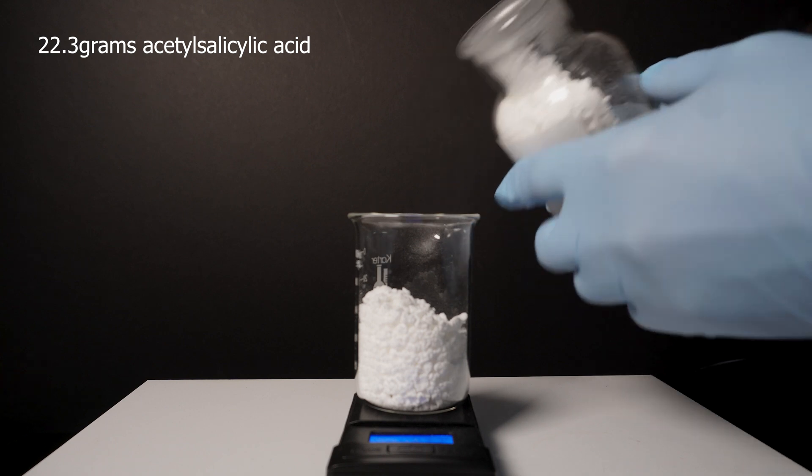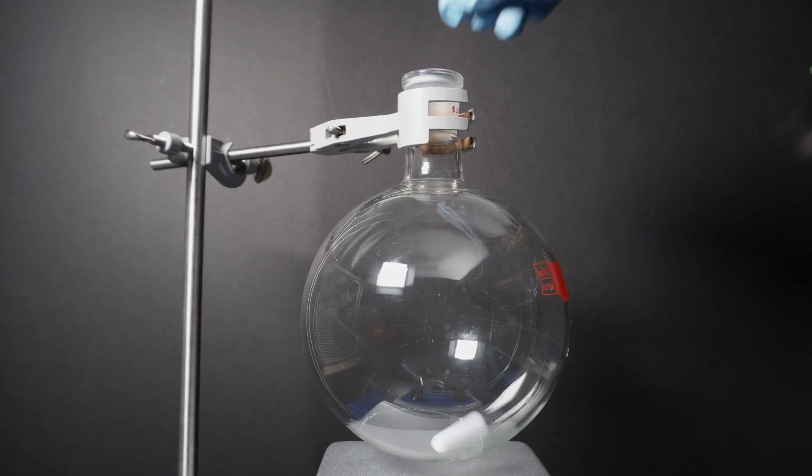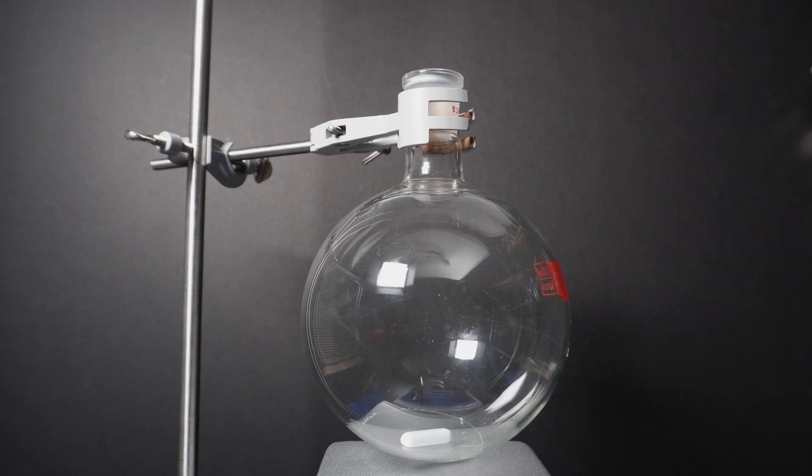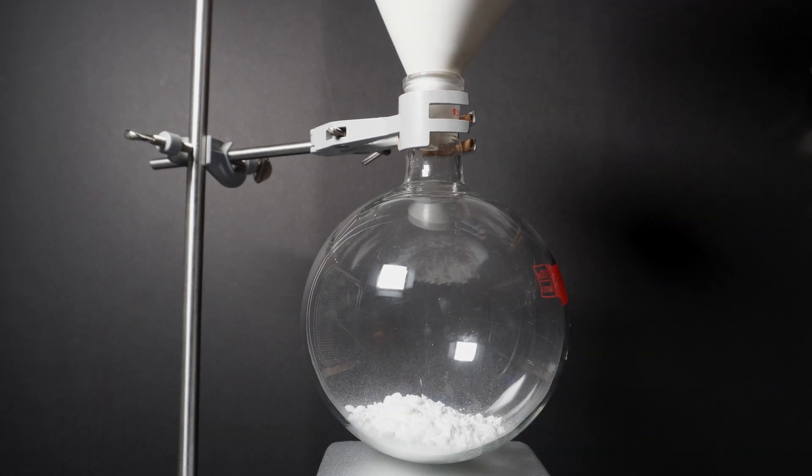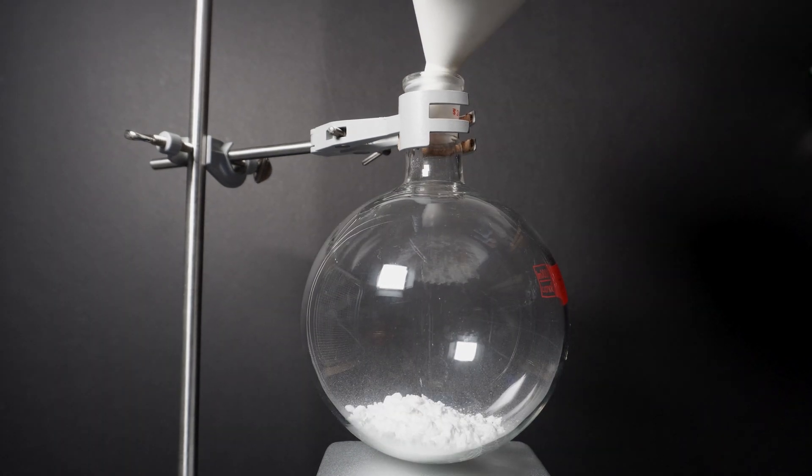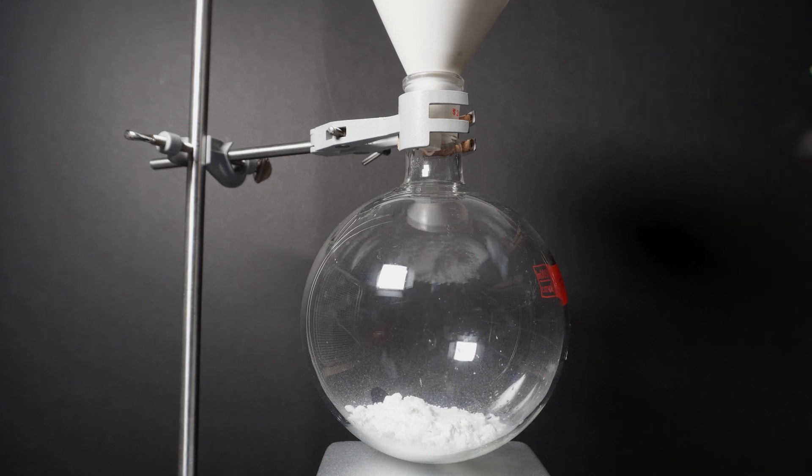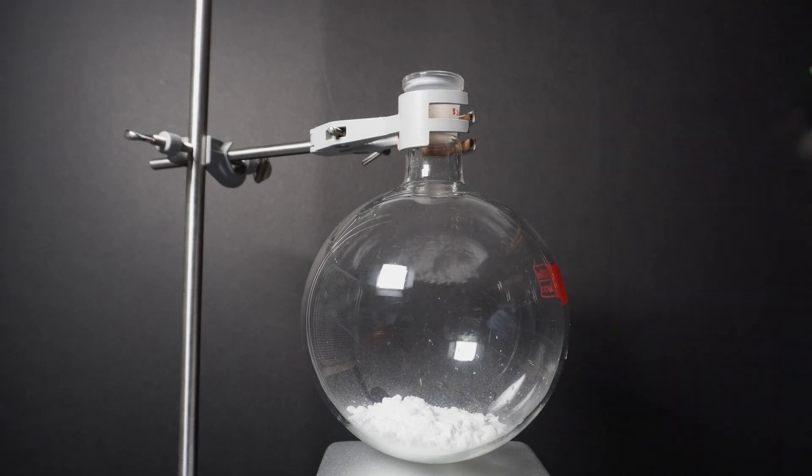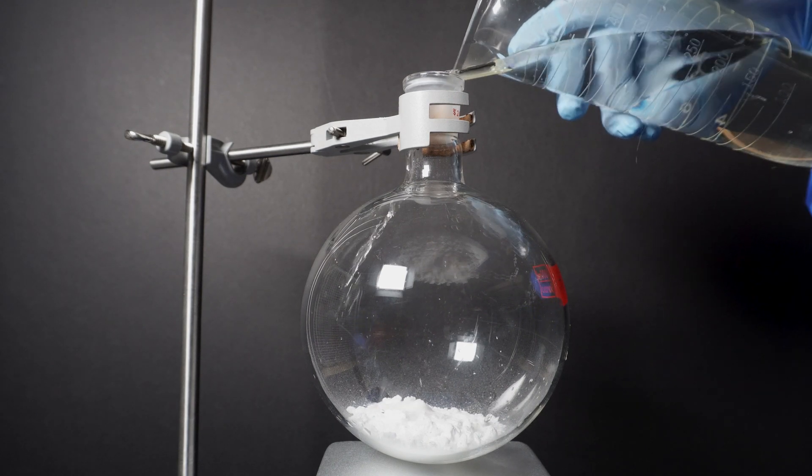We will start by weighing 22.3 grams of our ASA into a small beaker. We next prepare a round bottom flask by adding a stir bar followed by adding the 22.3 grams of the ASA. I also wash the beaker and funnel with a little bit of distilled water.